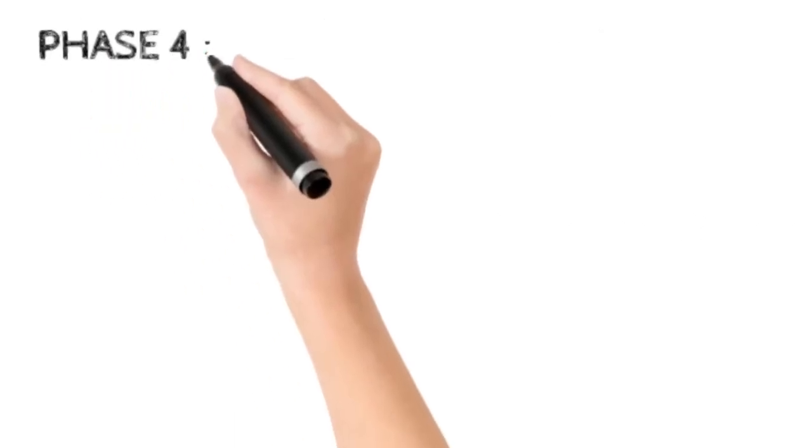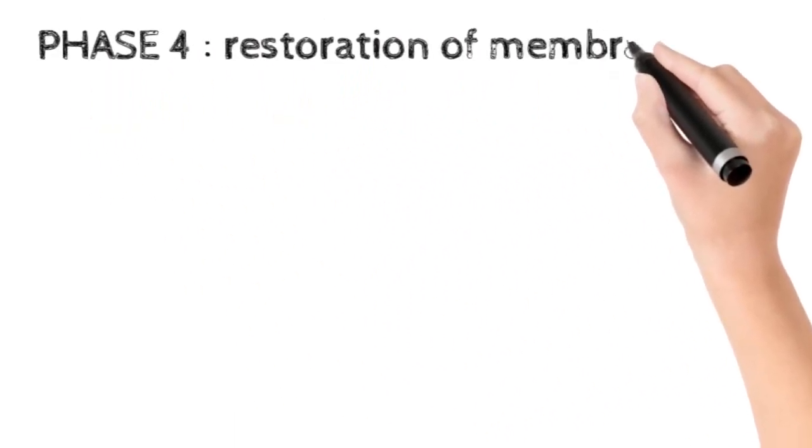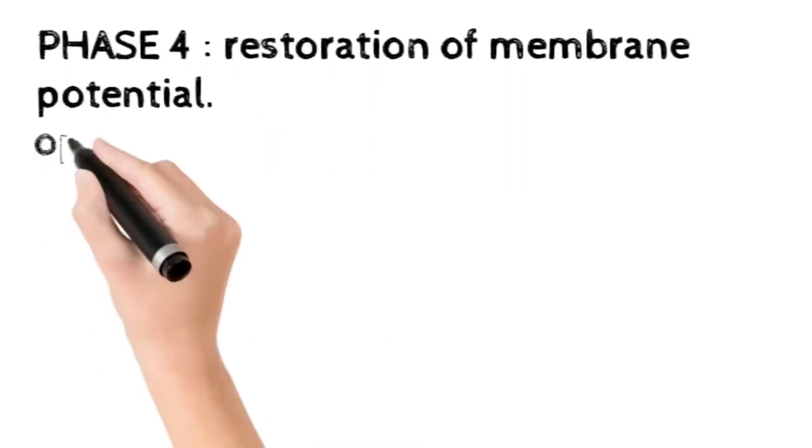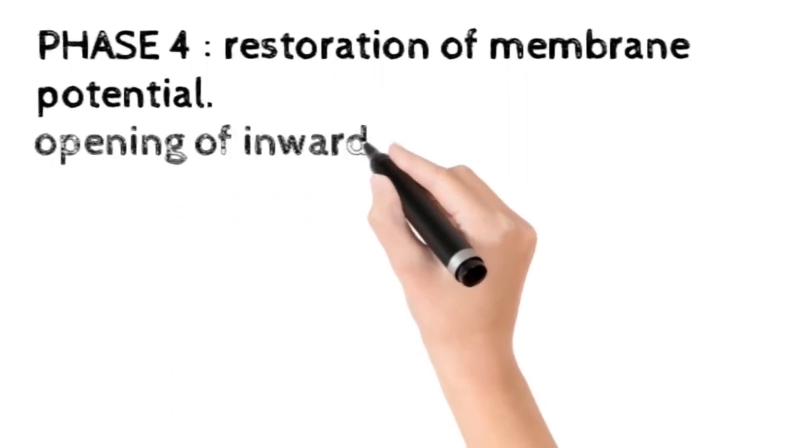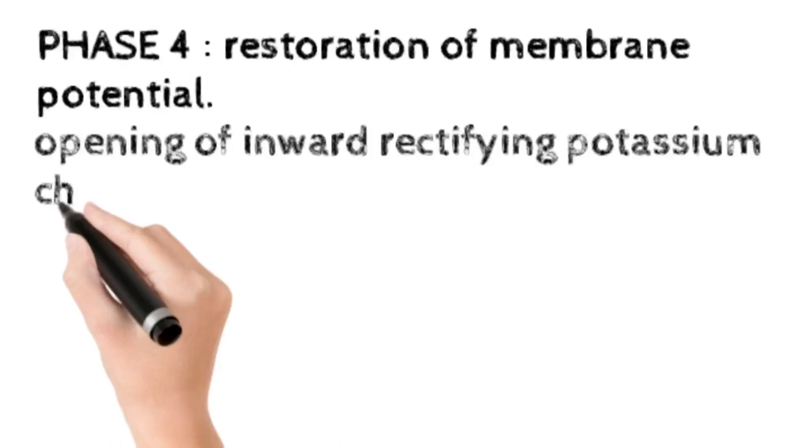Phase 4 is the phase of restoration of membrane potential. It occurs due to the opening of inward rectifying potassium channels that contribute to maintaining the restored membrane potential.